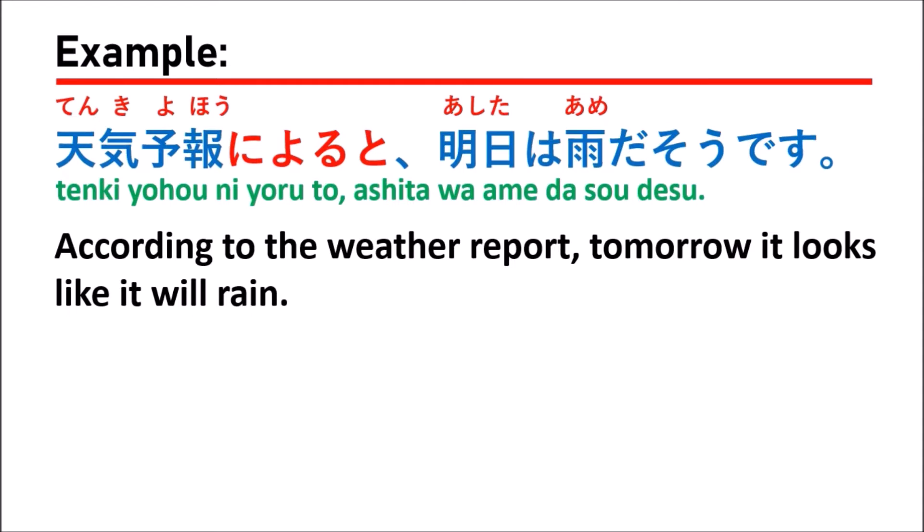So in this sentence, our noun is 天気予報, which means 'weather report.' When you say ni yoru to, it means 'according to.' So we say 'according to the weather report.' After that, you start a new sentence: 明日は雨だそうです, which means 'tomorrow it looks like it will rain.'